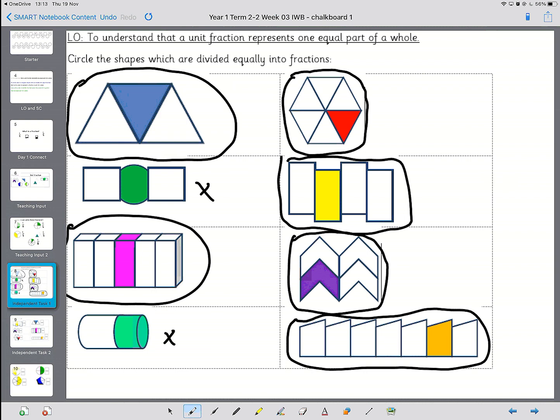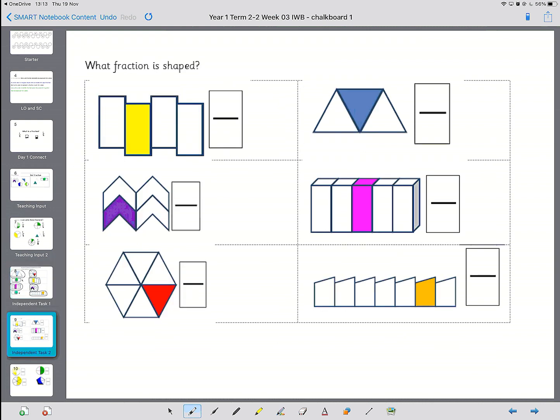These are the ones that are fractions. I want you to actually write what fractions they are. So I'm going to show you how to do the first one. First, you need to say how many colored parts there are. So there's one colored part. And then you need to say how many parts are there altogether. So there's one, two, three, four. And it's important that you count the colored one as well.